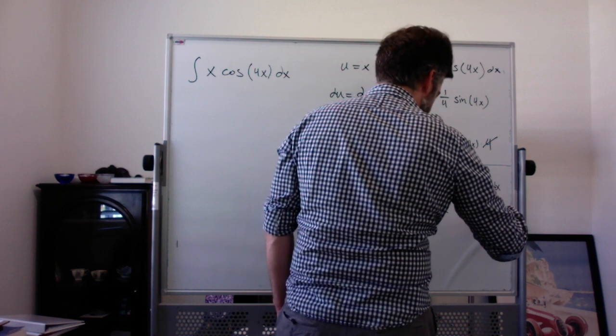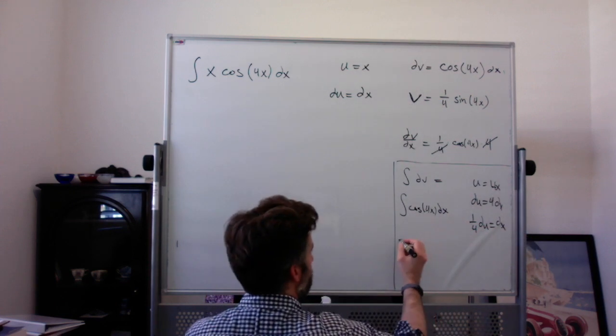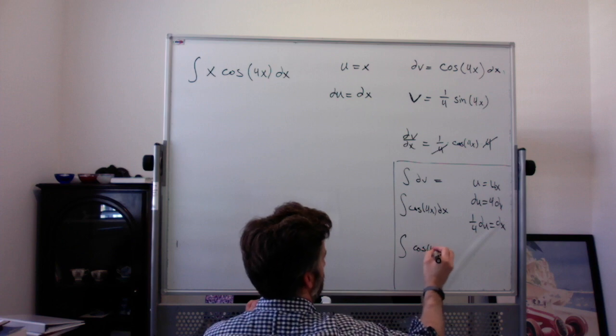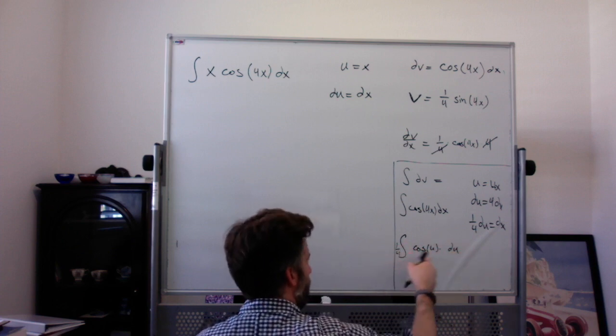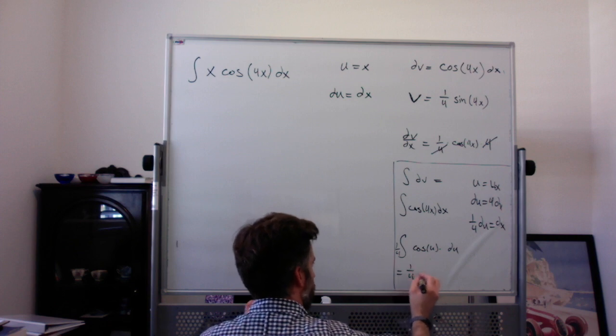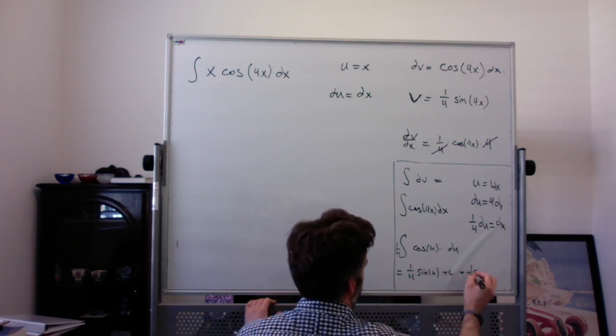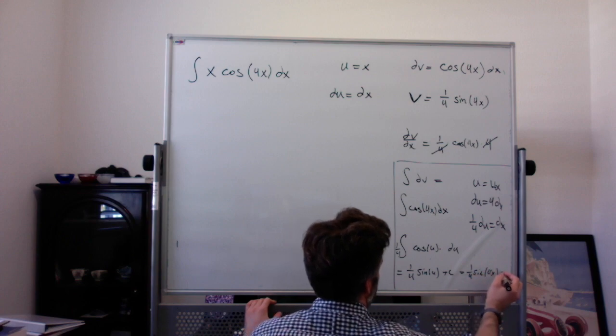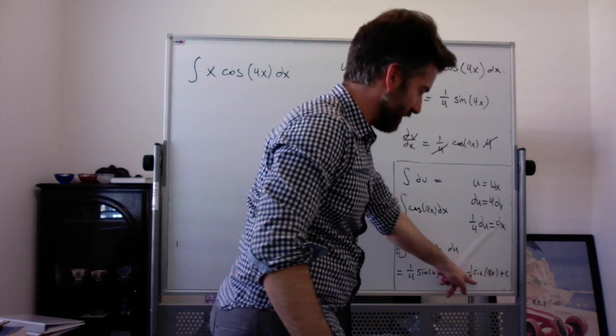This is so much work. And then I would write this as the integral of cosine of u times 1 fourth du, putting the 1 fourth out in front. And then I integrate that and get 1 fourth sine of u. So v would be 1 fourth sine of 4x. That's a lot of work. But you do see that we get the same result. The integral of cosine of 4x is sine of 4x divided by 4.